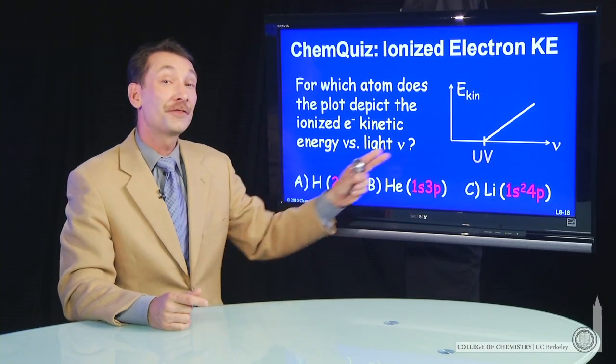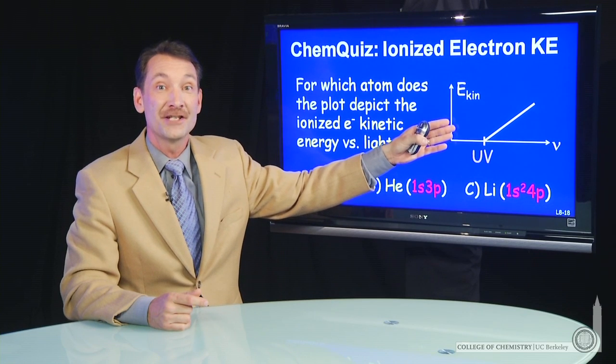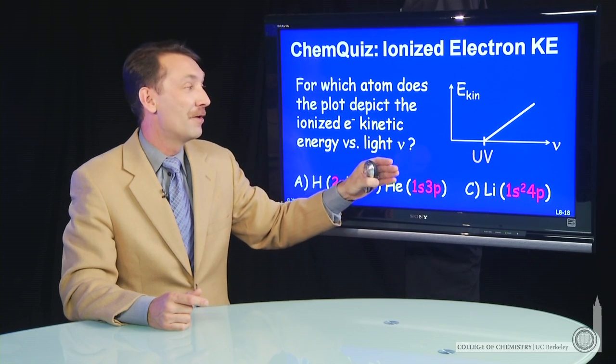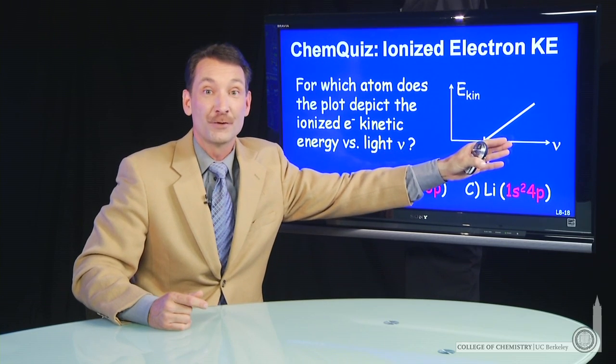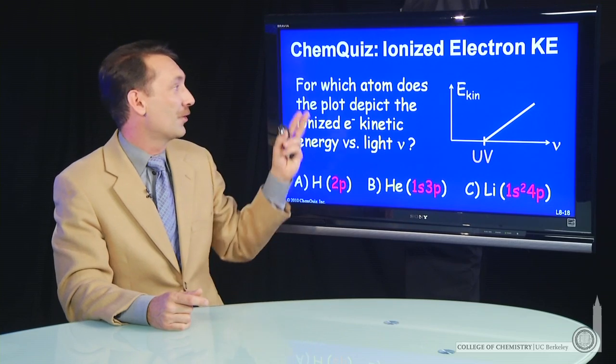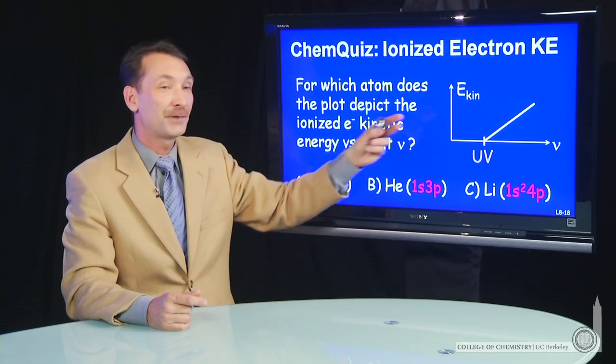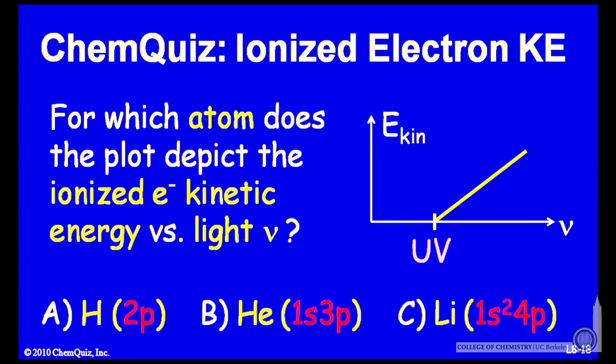Now let's see how good your memory is. We're going to look at those three atoms and see if we can choose which will have this ionization profile. Remember, when you ionize an electron, if you give excess photon energy, that'll go into kinetic energy of the ejected electron. So for which atom does this plot reflect the ionized electron kinetic energy versus photon energy of the light? Think about that for a minute and make a selection.